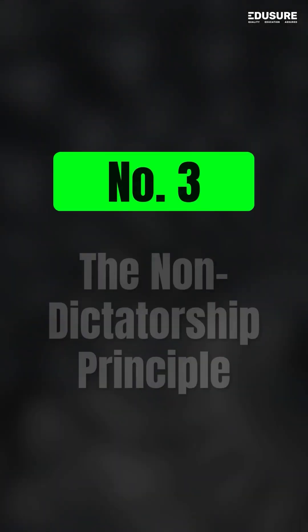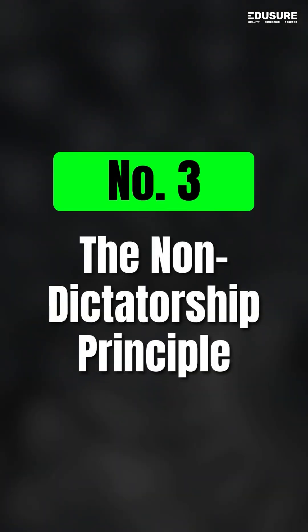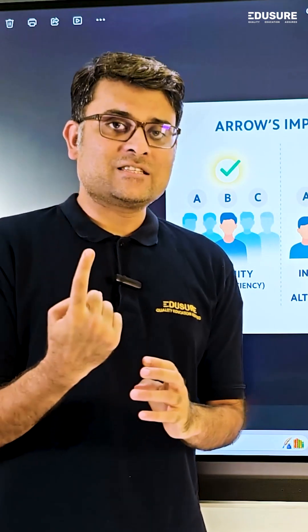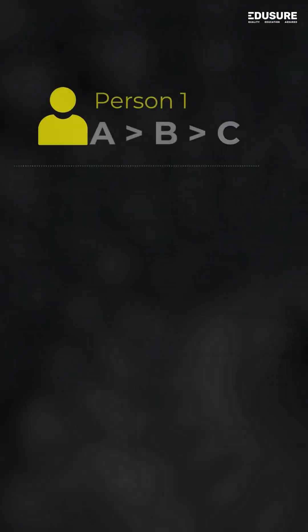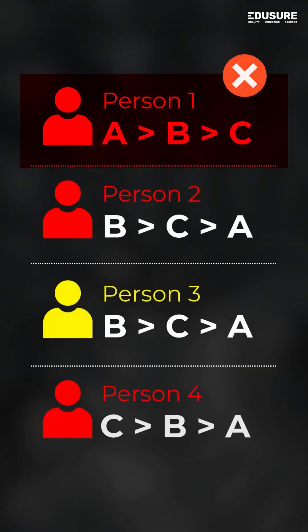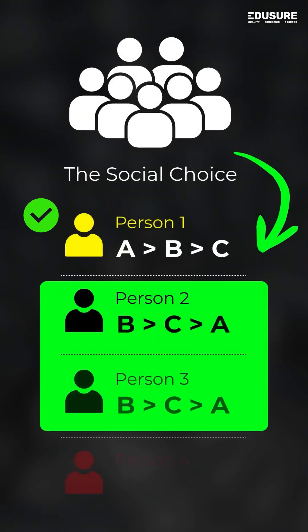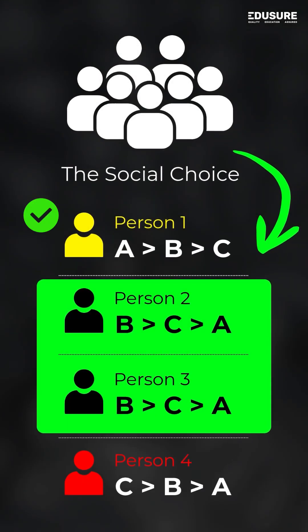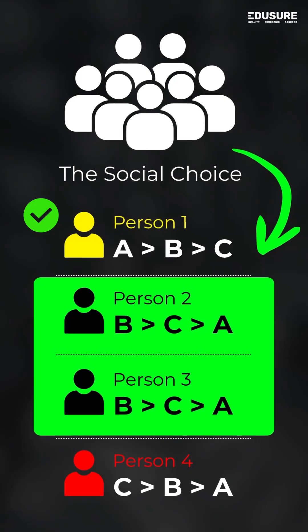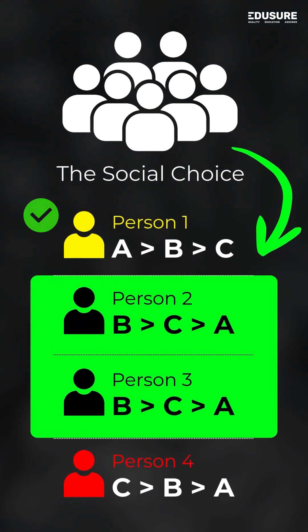And the third is Non-Dictatorship. That is, one person's ordering cannot be solely considered. We will have to consider the ranking or the preferences of all individuals in a particular society.